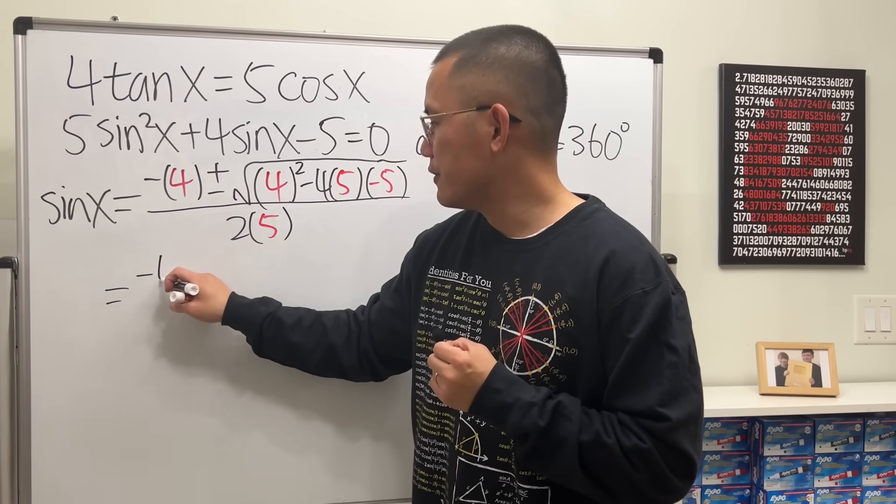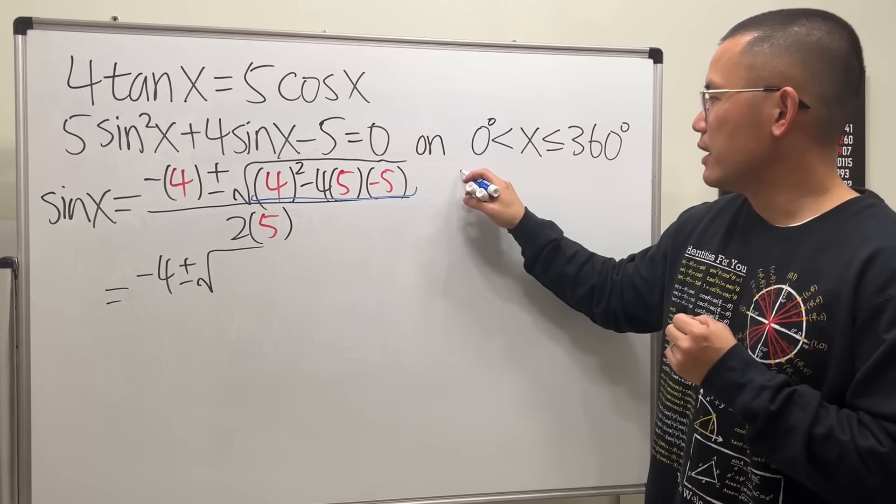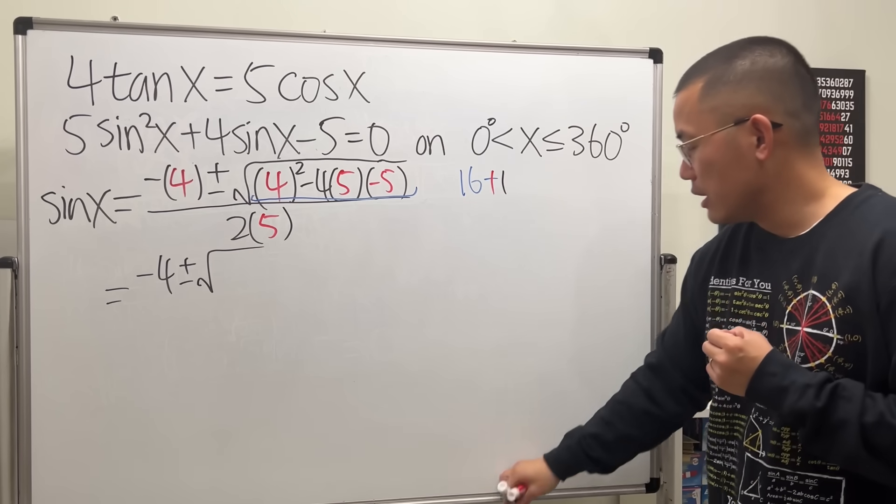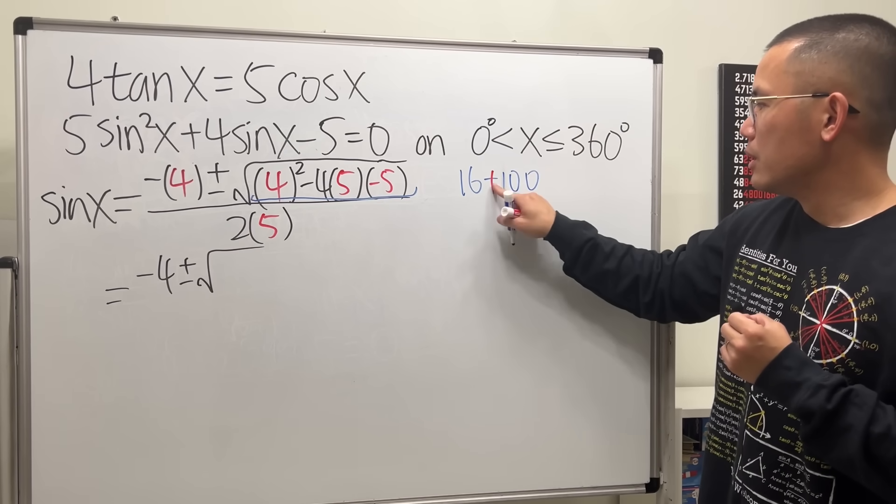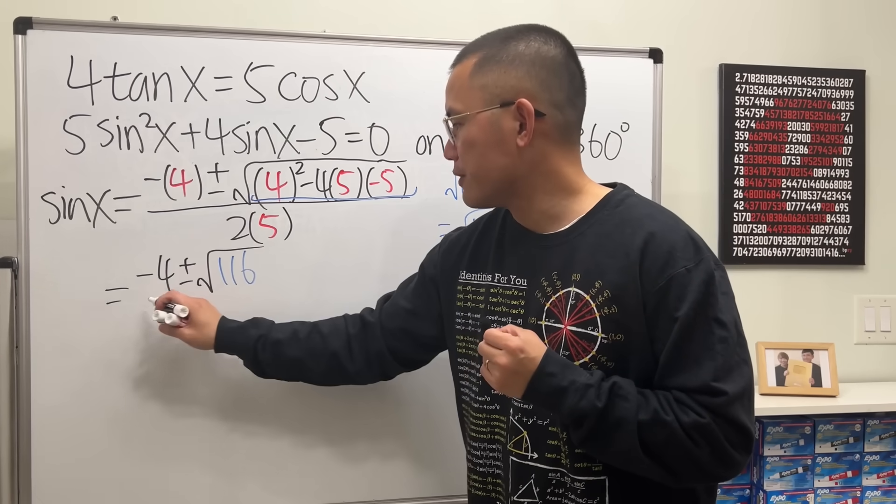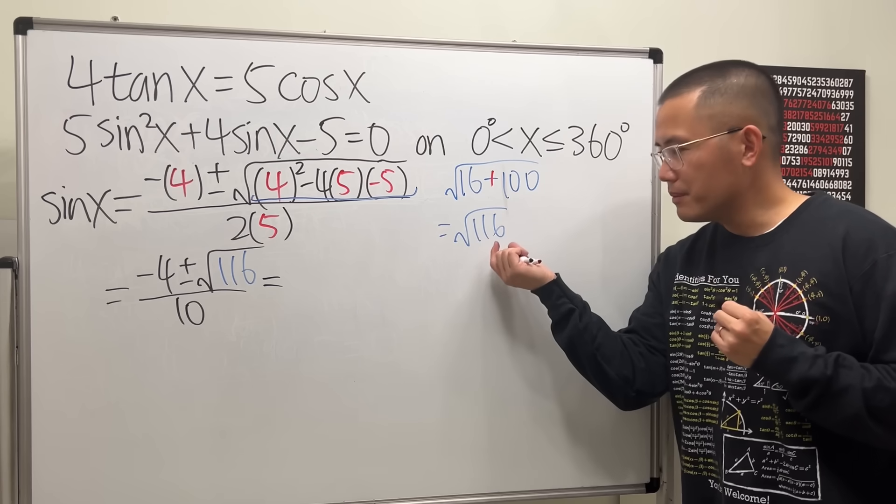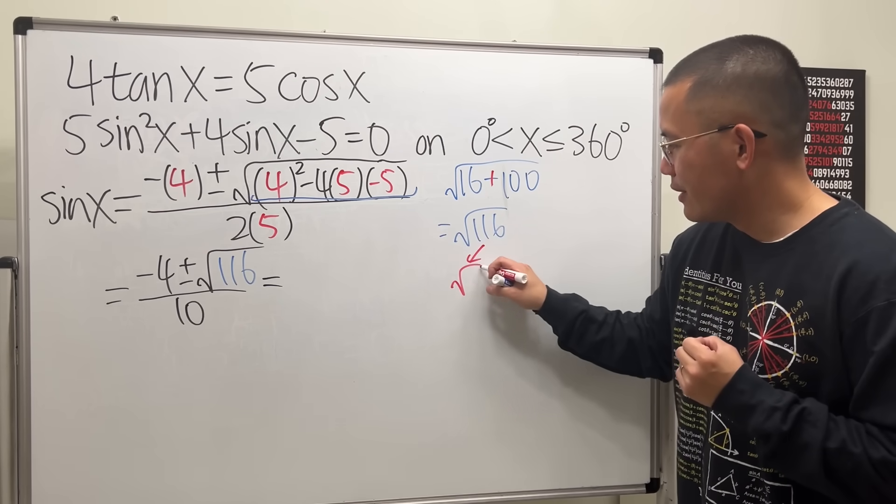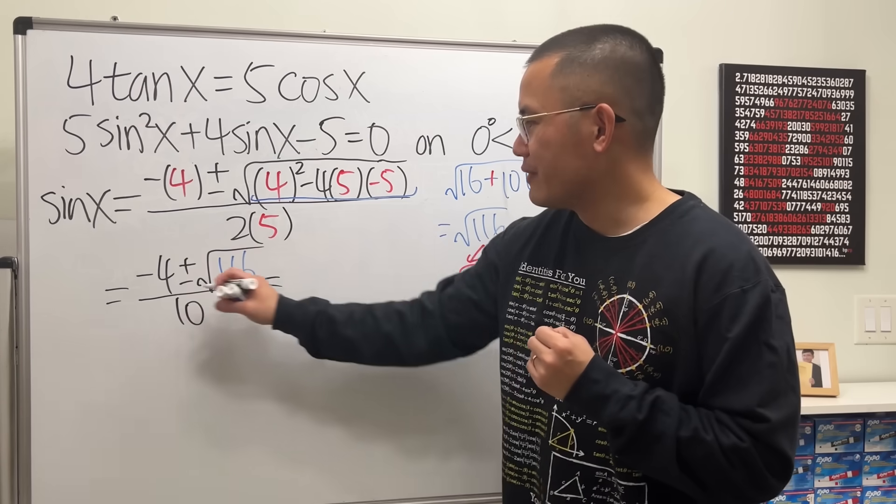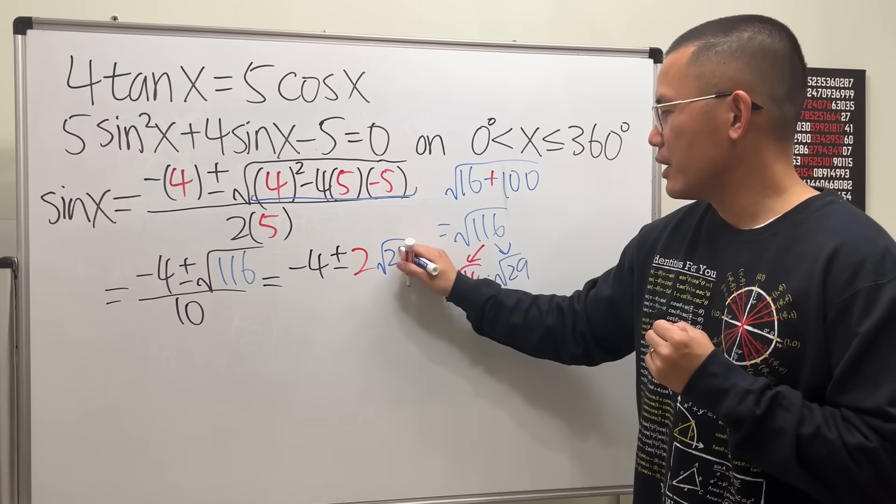Now let's just continue this. This right here is negative 4, and then plus or minus. For the inside, let's see. Now it's going to give us 16, and then minus. And then we have 4 times 5 is 20, times 5 is 100. But minus minus becomes a plus, so that's plus 100 here. So we are looking at square root of 116. And then that's over 2 times 5, which is 10. Moreover, we can simplify this a little bit. Because I noticed that the last two digits, 16, is a multiple of 4. So we can use 4. 4 times 29 gives us 116. So we can have this breakdown. So that means we have negative 4 plus or minus. Write this square root as 2, and then square root of 29, over 10.